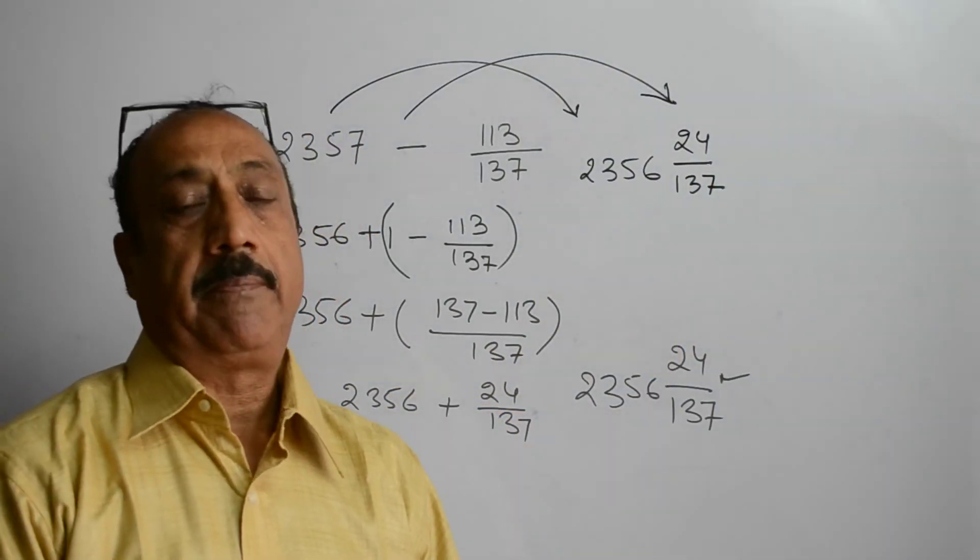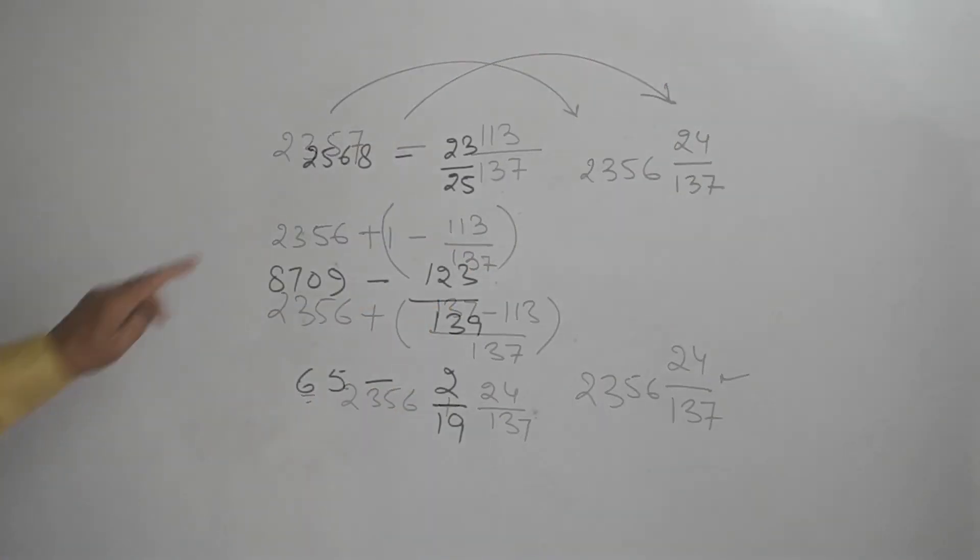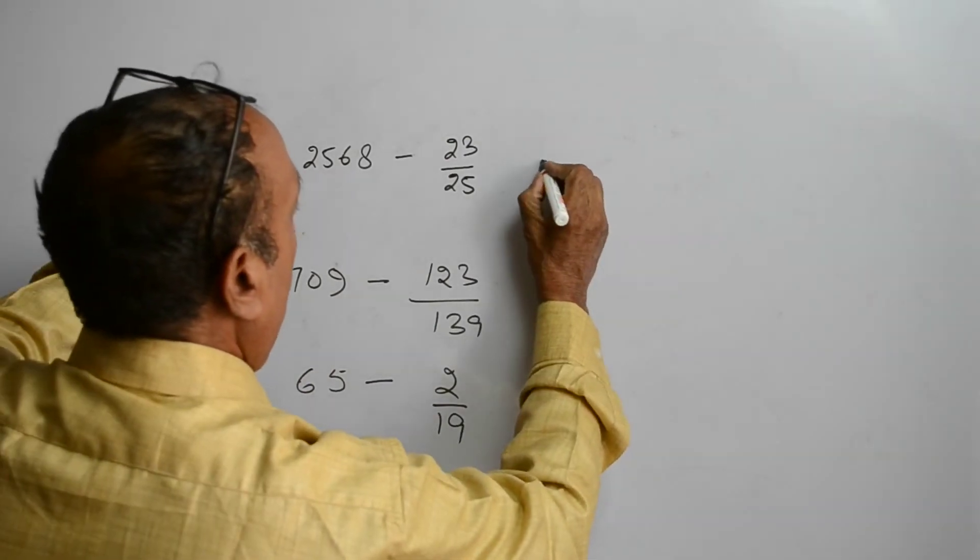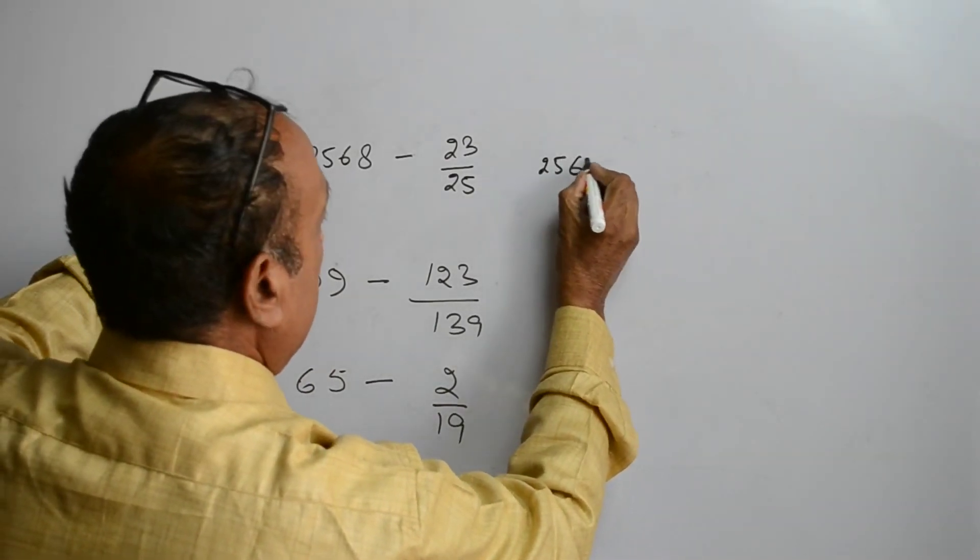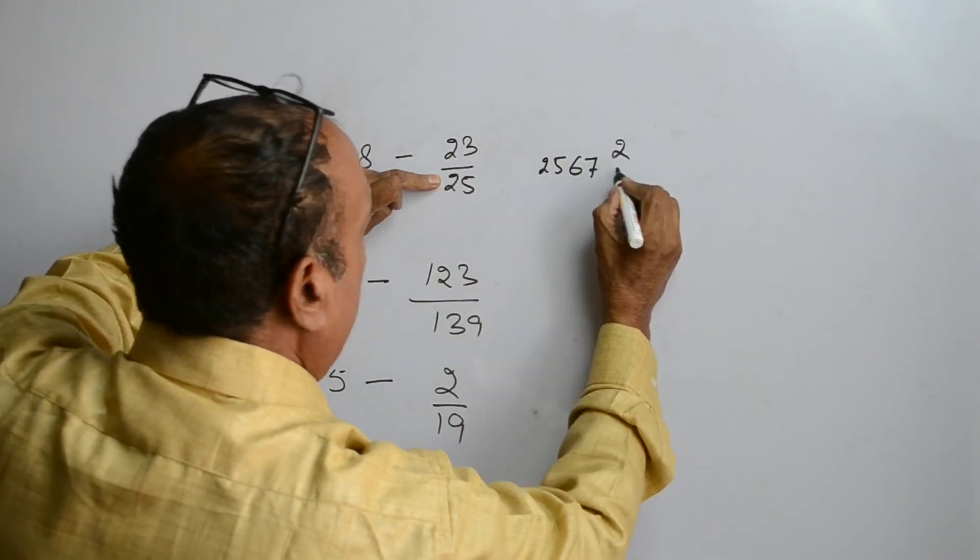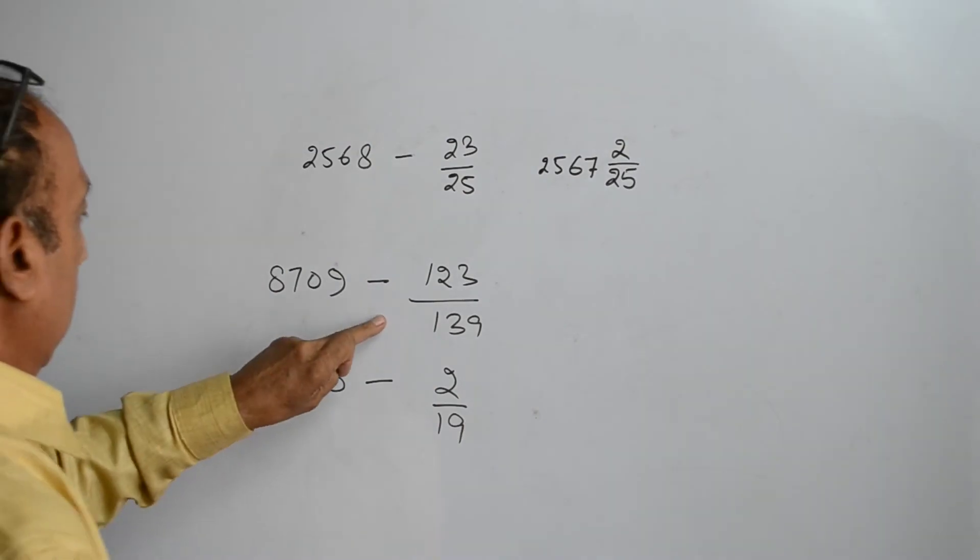Now let us do some practice for such type of questions. So the answer to this question is 2567 and 2 upon 25. 25 minus 23 is 2 upon 25.